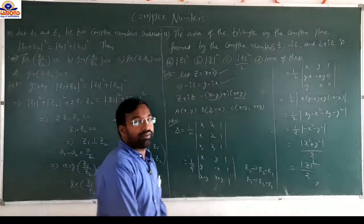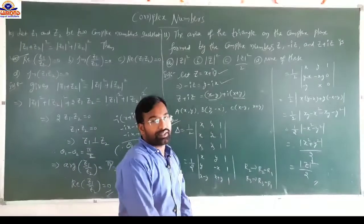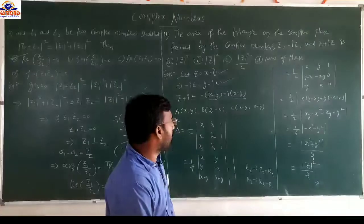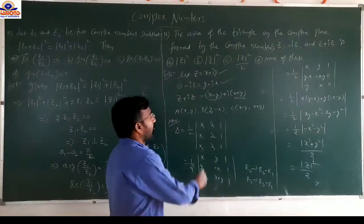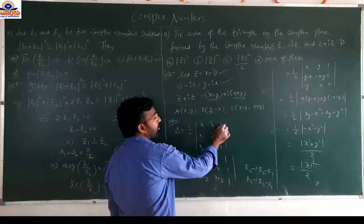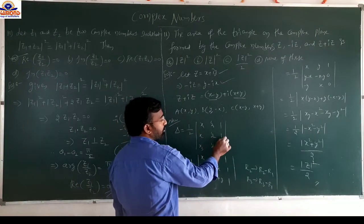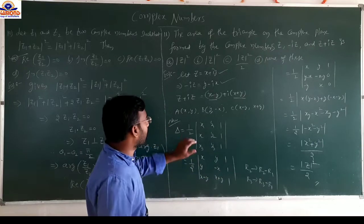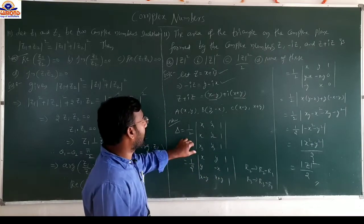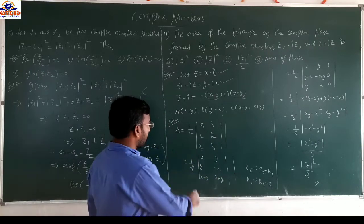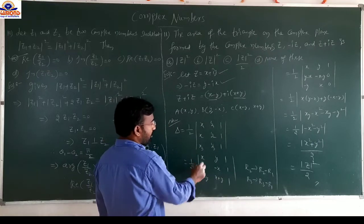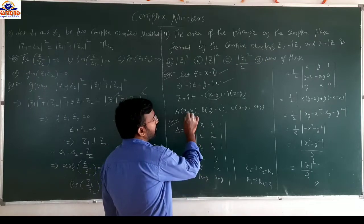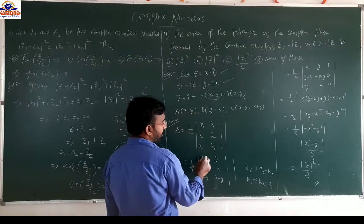The area formula for three vertices is (1/2)|det of matrix with rows (x₁,y₁,1), (x₂,y₂,1), (x₃,y₃,1)|. Substituting: rows are (x, y, 1), (y, −x, 1), (x−y, x+y, 1). Apply R₂ → R₂−R₁ and R₃ → R₃−R₁ to make the last column entries 0 for rows 2 and 3.